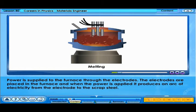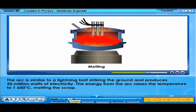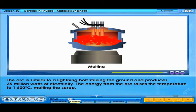Power is supplied to the furnace through the electrodes. The electrodes are placed in the furnace, and when the power is applied, it produces an arc of electricity from the electrode to the scrap steel. The arc is similar to a lightning bolt striking the ground, and produces 35 million watts of electricity. The energy from the arc raises the temperature to 1600 degrees Celsius, melting the scrap.